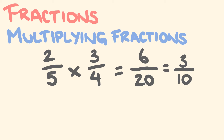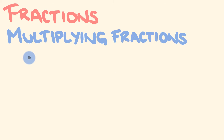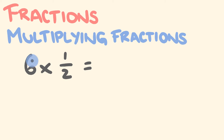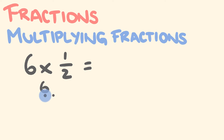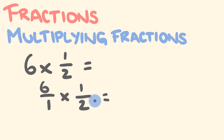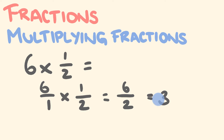There are a couple of variations to be aware of. What if you get something like six times a half? All multiplication is just repeated addition, so this is half added six times. The easiest way is to write the six as a fraction: six over one, since six divided by one equals six. Then multiply: six times one is six, one times two is two, giving six over two, which equals three.